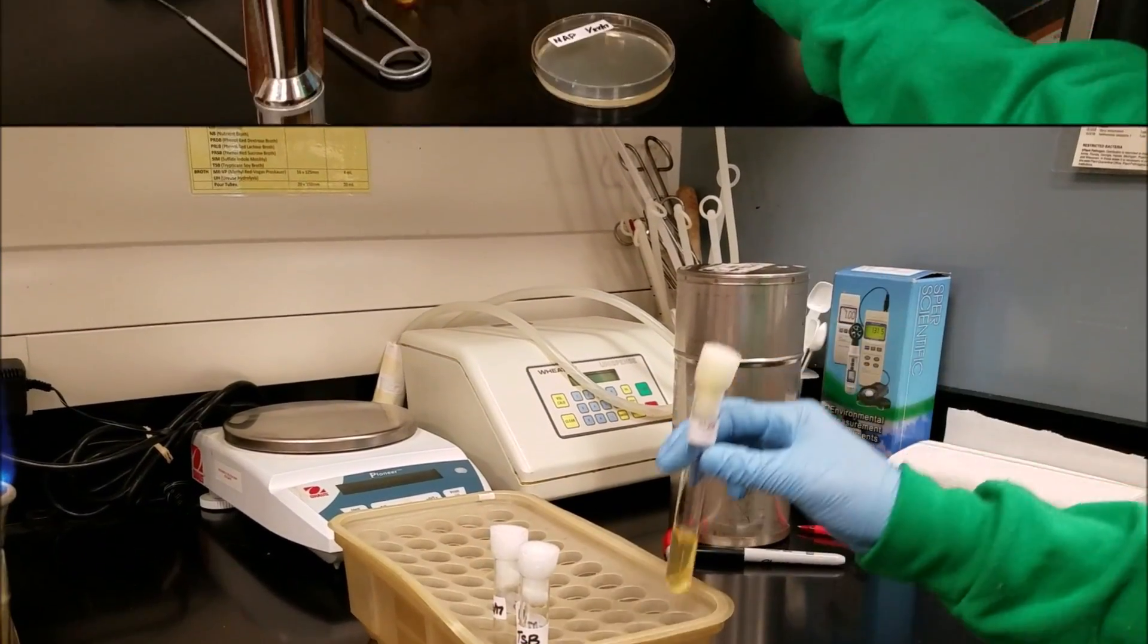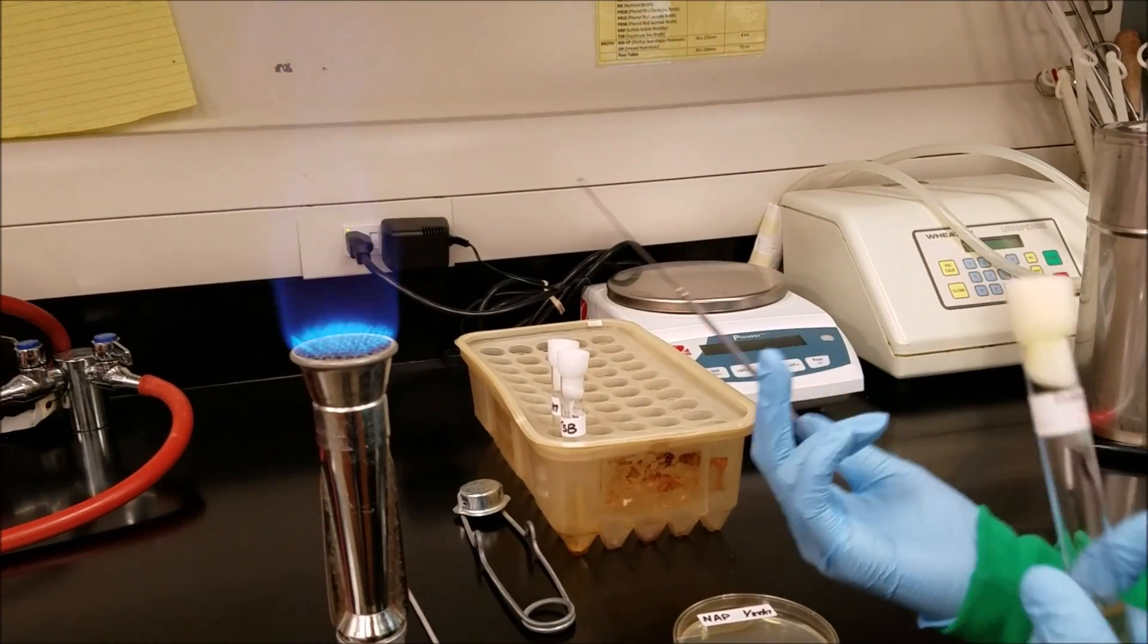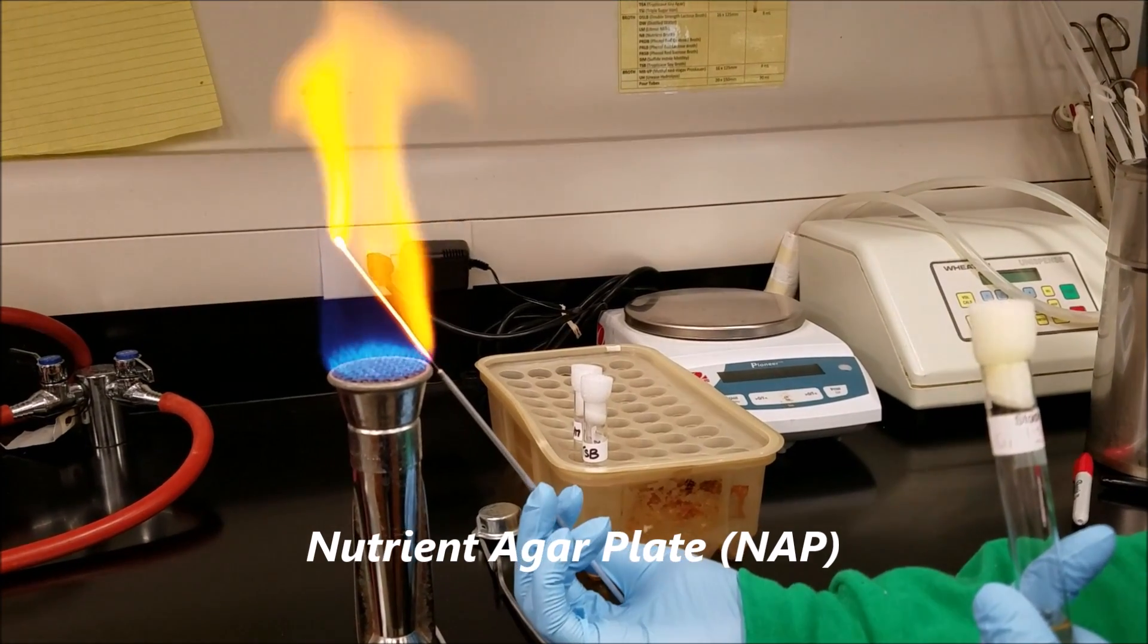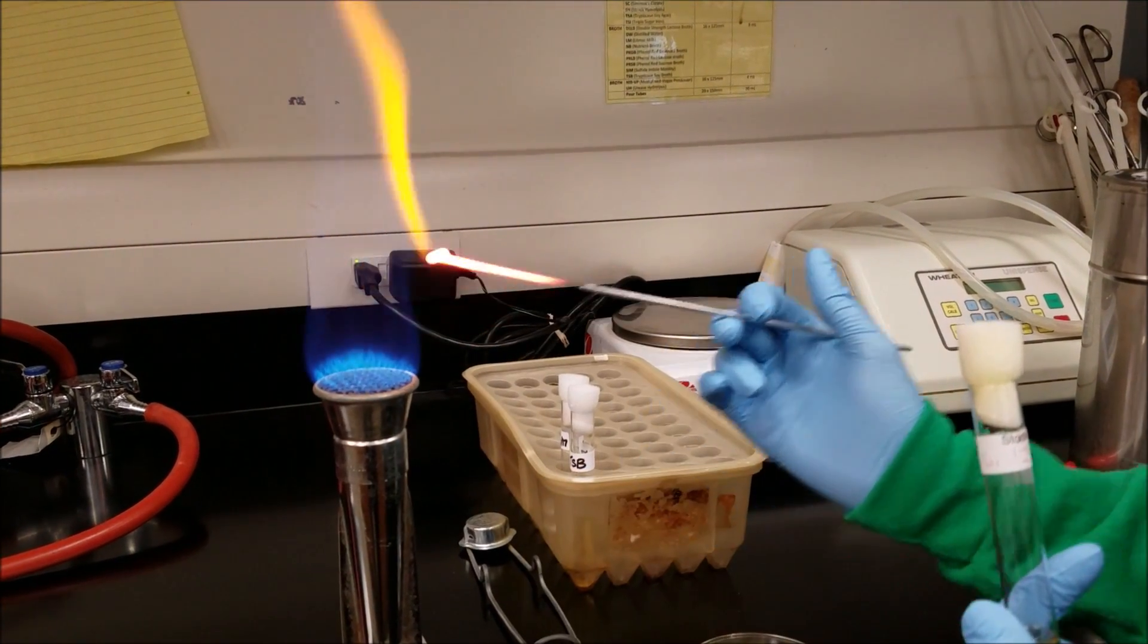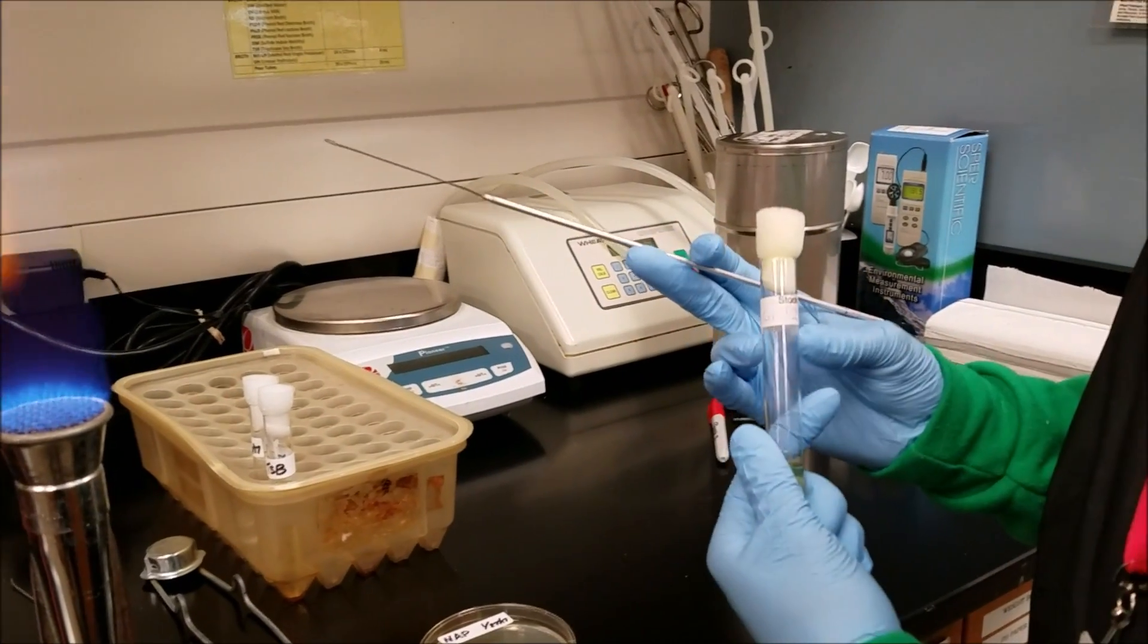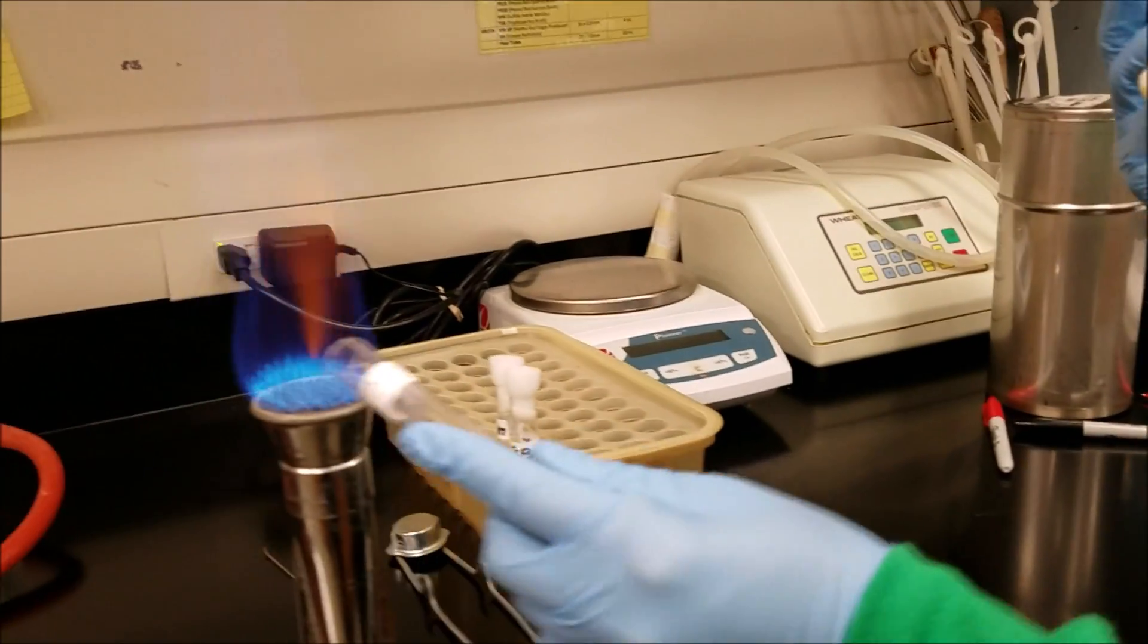And you're going to replace the test tubes. The final type of inoculation that you will see for this microbiology class is from a broth to a plate. Now, the plate media is made up of the same ingredients as the slant. The only difference is one is in a plate, a petri dish, and the other is in a test tube as a slant.